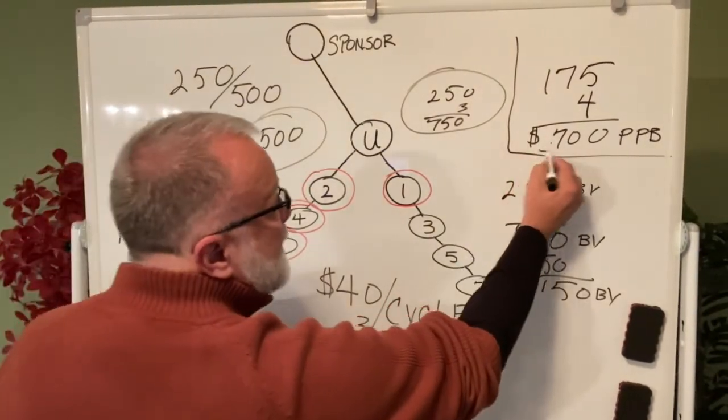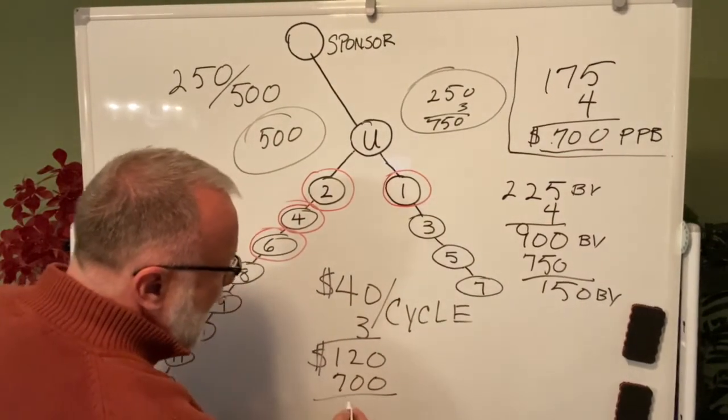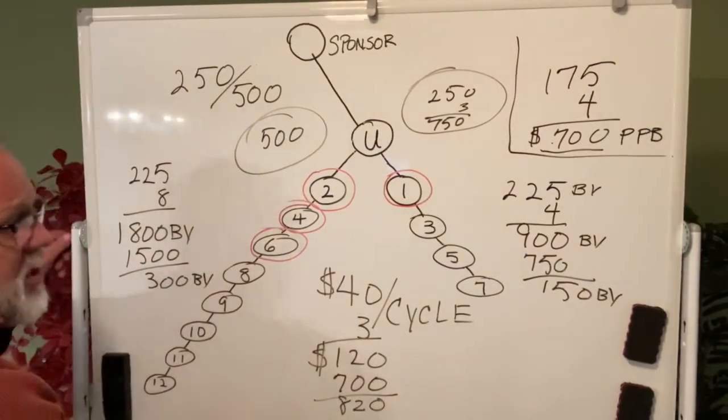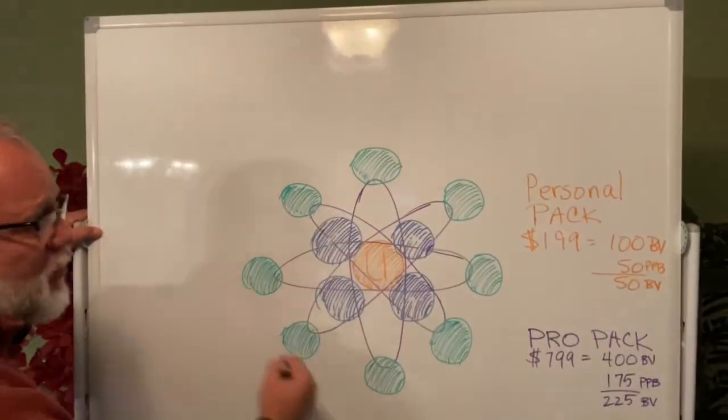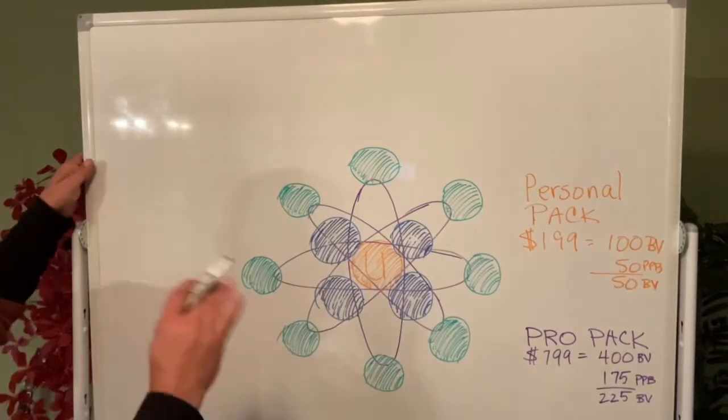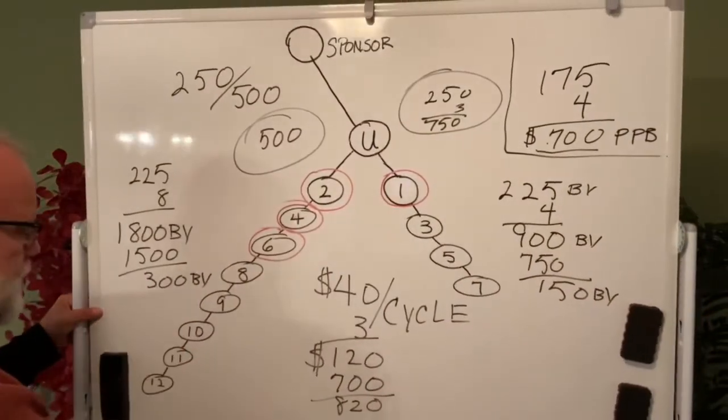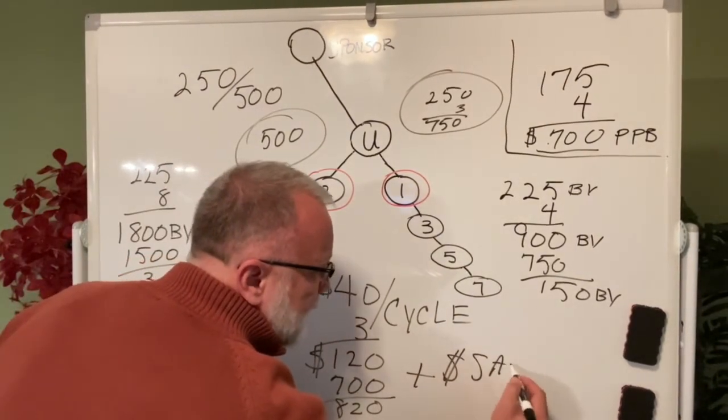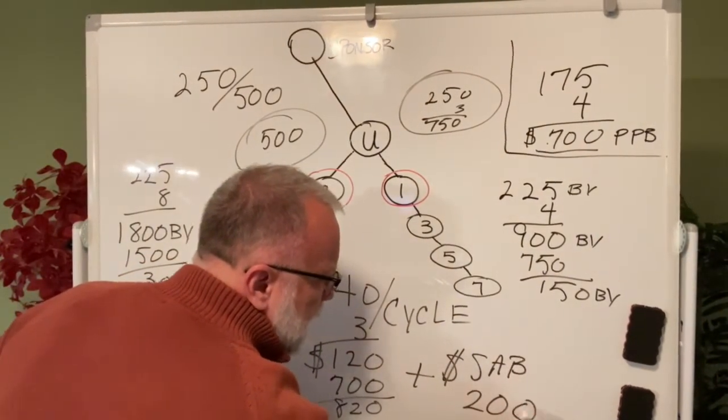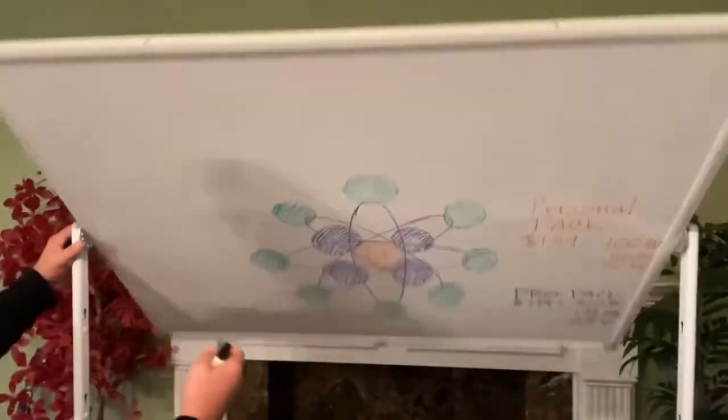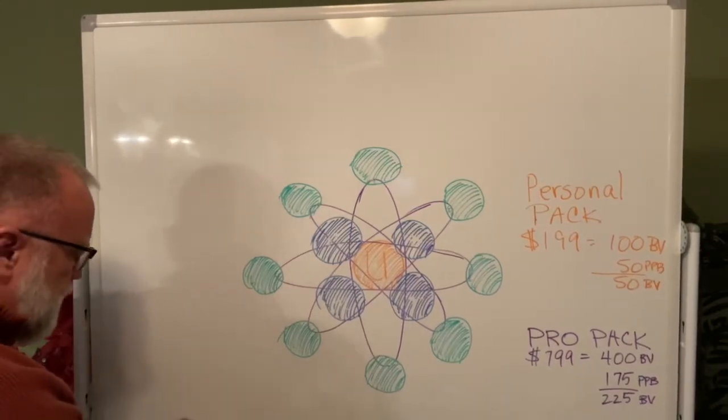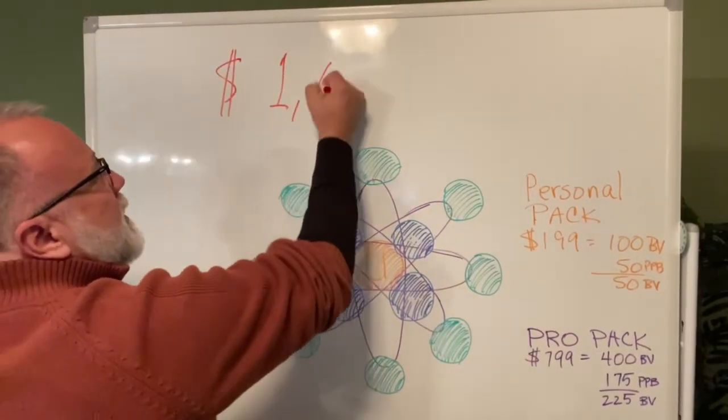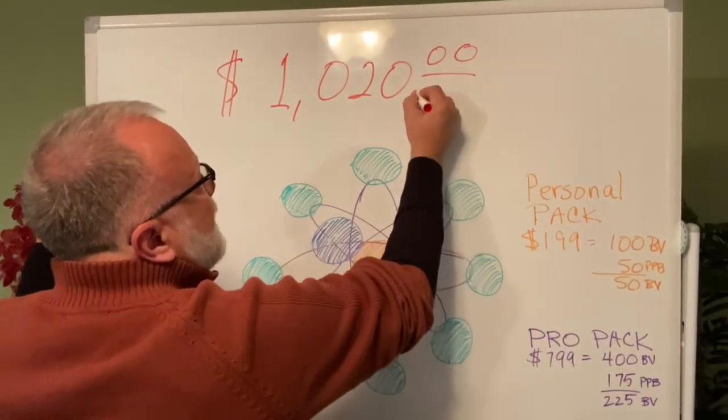Now, remember, you've already made $700. Now you're at $820. And if you reach what we call the super affiliate, which is having all 12 that we just described here, which that's what you just did with all buying the pro pack, you just made another $200 for the super affiliate bonus. So that totals out to what you just made in your first month, $1,020 minimum.